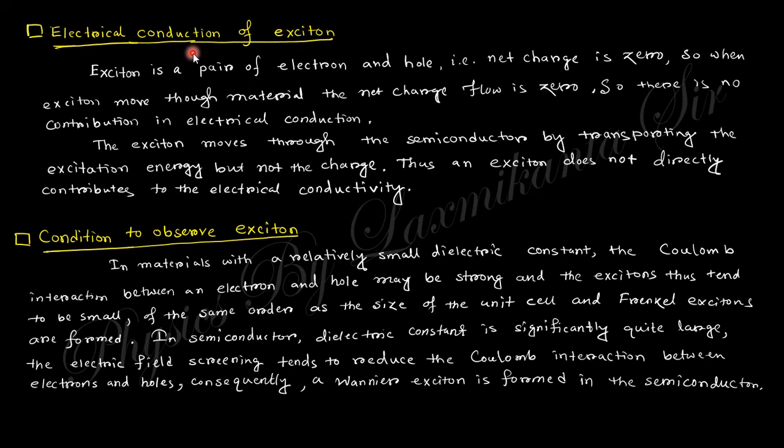Next is condition for observing exciton. There are two types of exciton. These two types of exciton can be observed: the Coulomb interaction between electron and hole may be strong and exciton tends to be small in the Frenkel exciton, and another is the Wannier exciton.